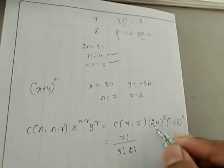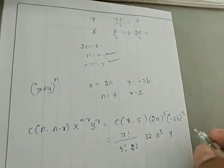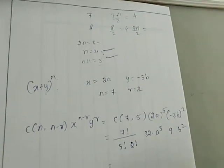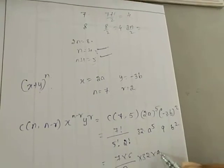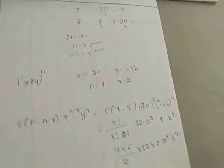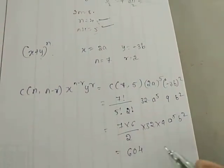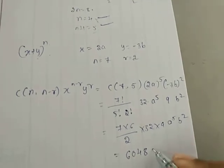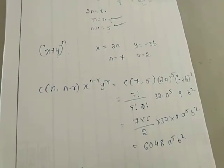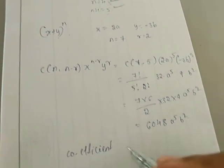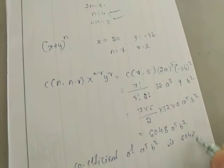Simplifying: 7×6/2 = 21, and 32 × 9 = 288, so 21 × 288 = 6048·a^5·b^2. Therefore, the coefficient of a^5·b^2 is 6048.